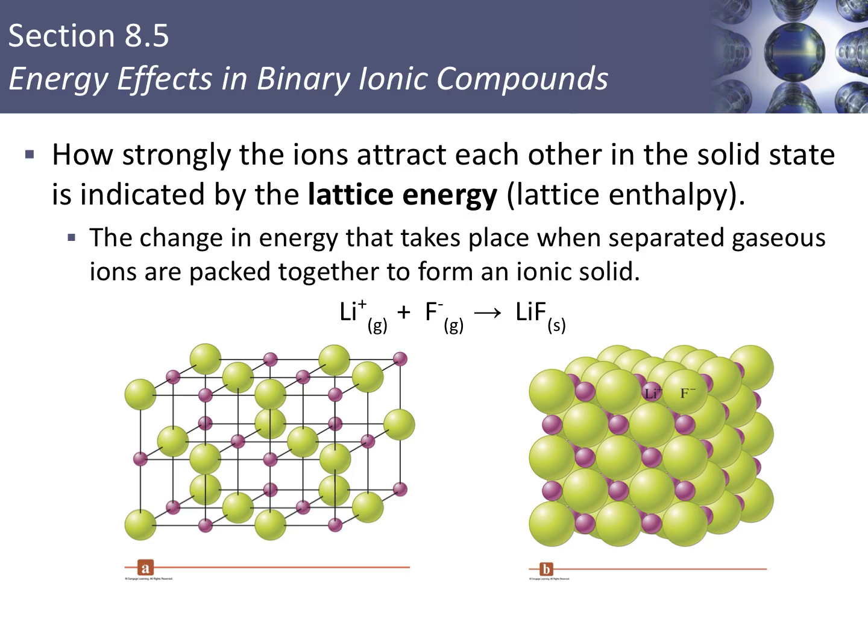We just finished talking about bond energy for molecules. Now we're going to talk about the same type of thing for ionic compounds — we call this lattice energy. It is technically defined as the amount of energy released when you take a cation and an anion in the gas state and combine them together to make an ionic compound. It's bond forming, so energy is released. Some people also discuss lattice energy in terms of the amount of energy it takes to break the lattice, similar to how bond energy describes breaking a covalent bond.